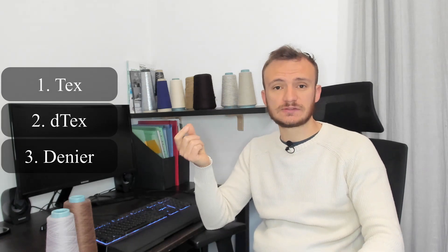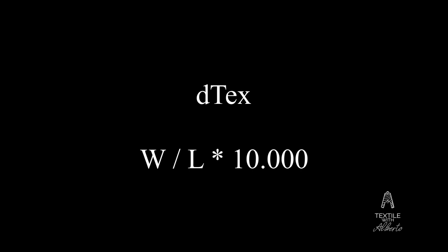We have different types of measures in the direct system, but the most commonly used are tex, dtex, and denier. To calculate tex, you take the weight, divide by the length, and multiply by 1000. For dtex it's the same but you multiply by 10,000. For denier, you divide the weight by the length and multiply by 9,000. There are others but they are rarely used.